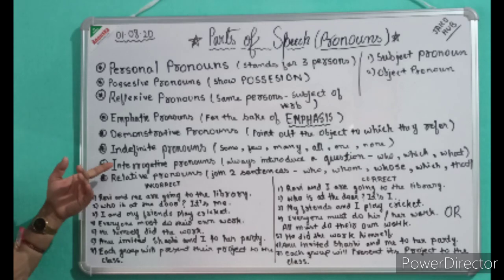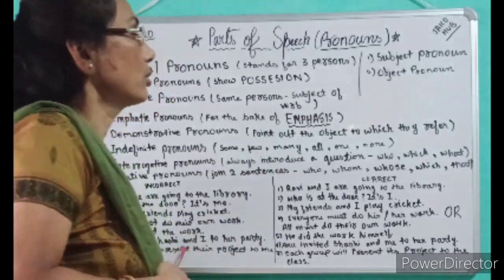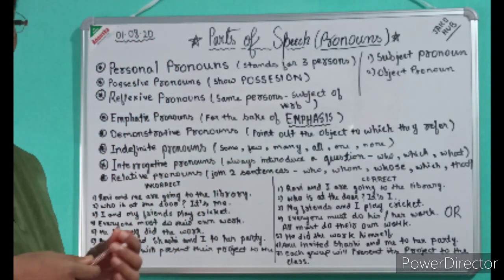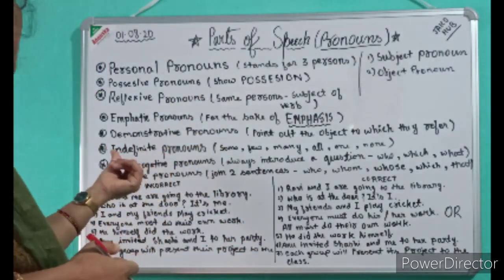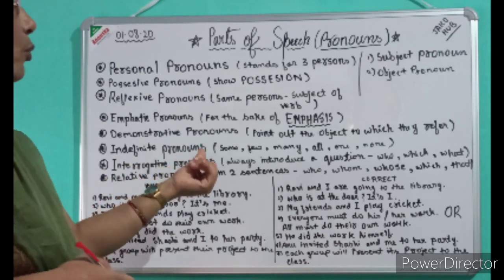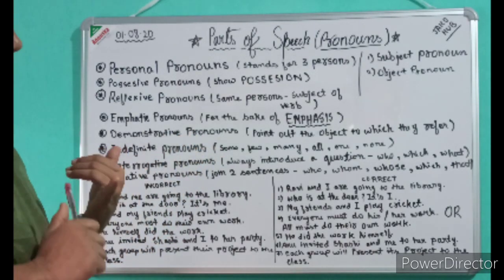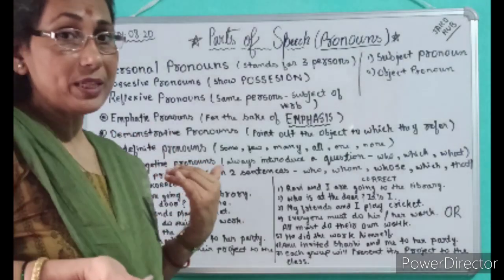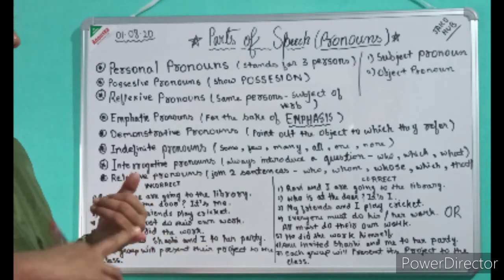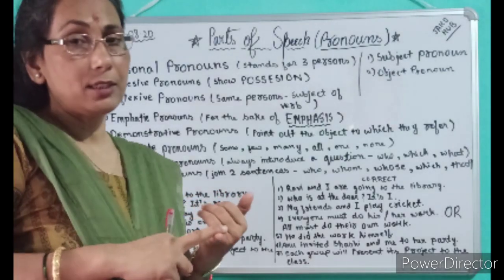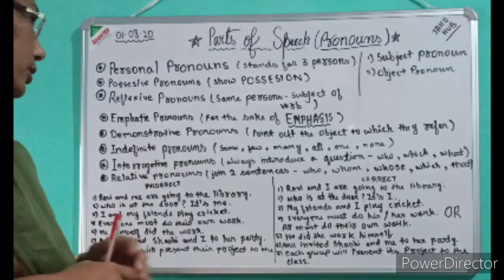Interrogative pronouns — the word explains itself. Interrogative means questions. They always introduce a question: who, which, what. 'Do you know who has done this?' Here, 'who' is the interrogative pronoun. 'Which book is this?' — 'which' is interrogative. 'What have you told me yesterday?' — 'what' is interrogative. So who, which, and what are interrogative pronouns.